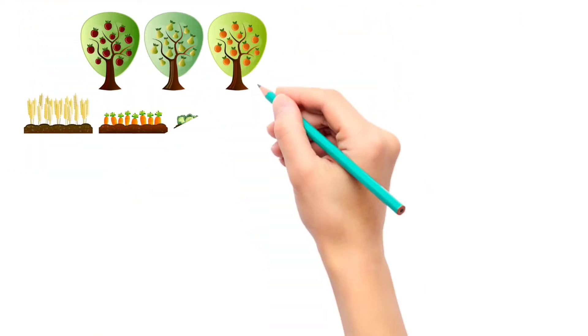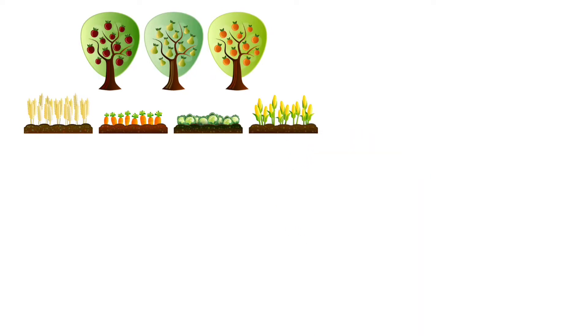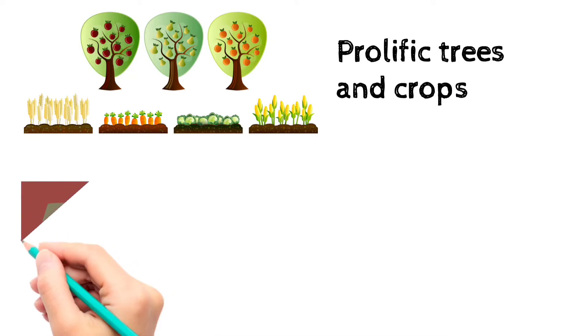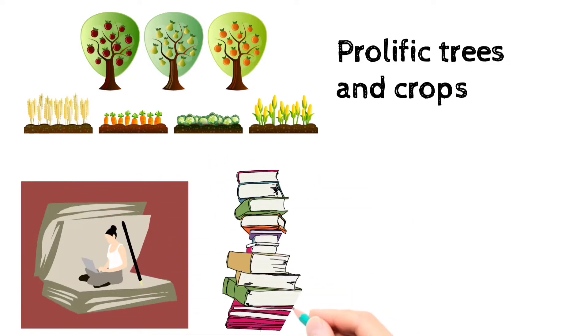Or suppose some fruit trees or crops are very fertile and give good harvest. They can be called prolific trees and crops. Or imagine a writer who has written many books. That's prolific.